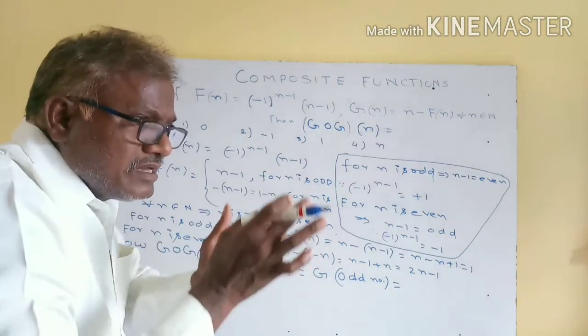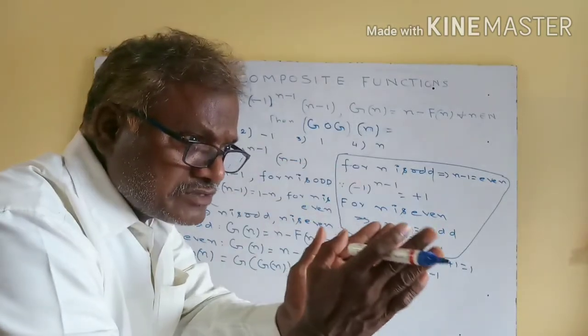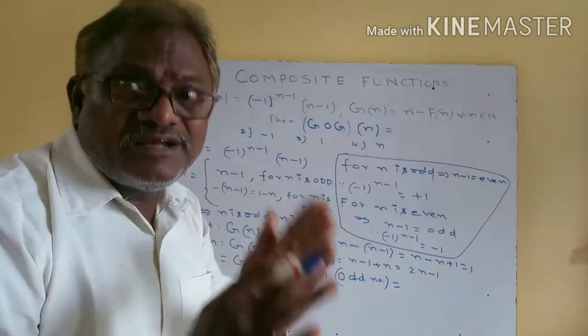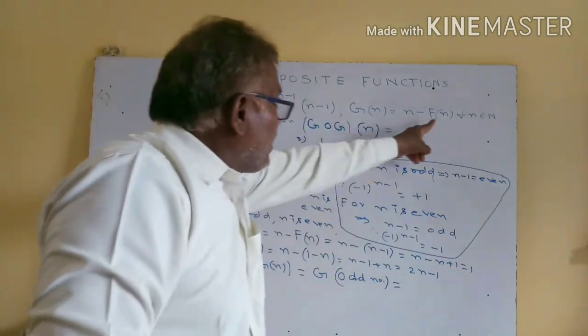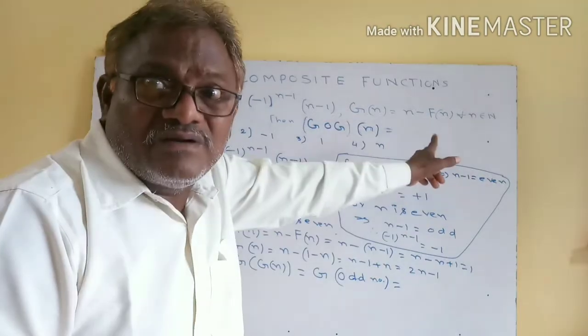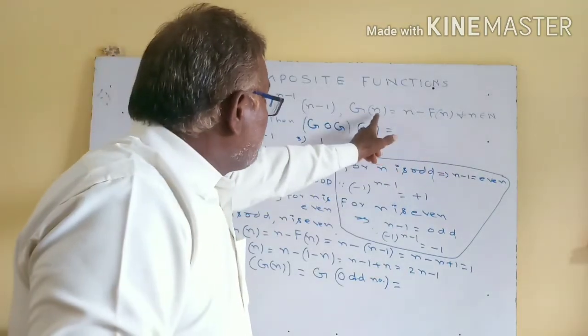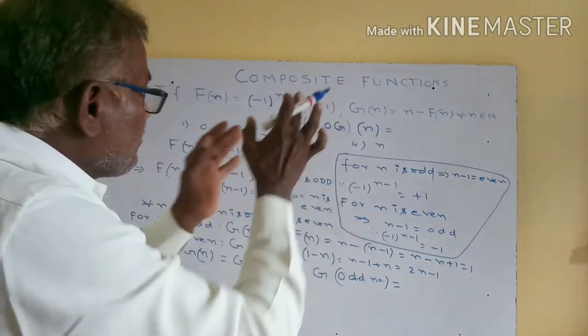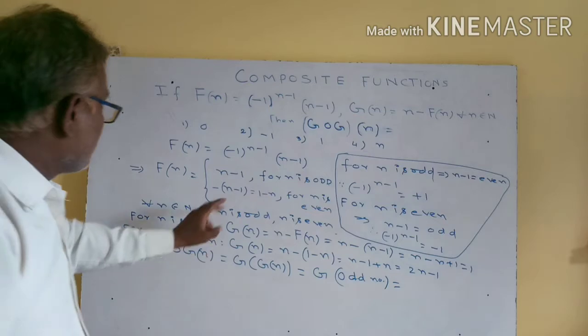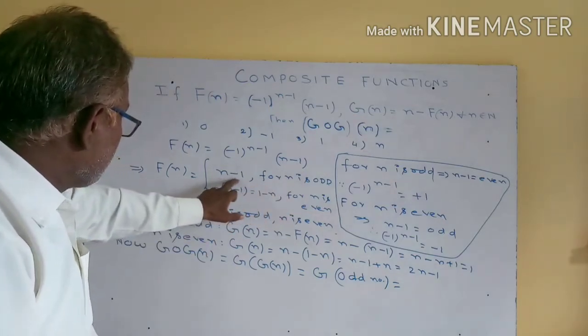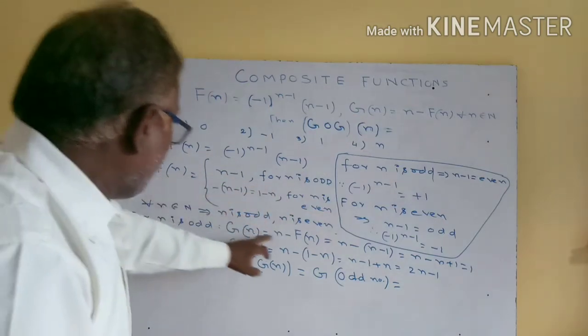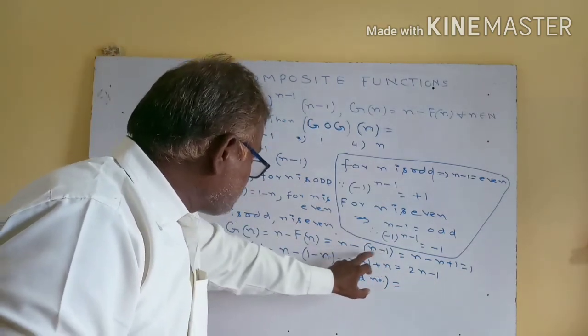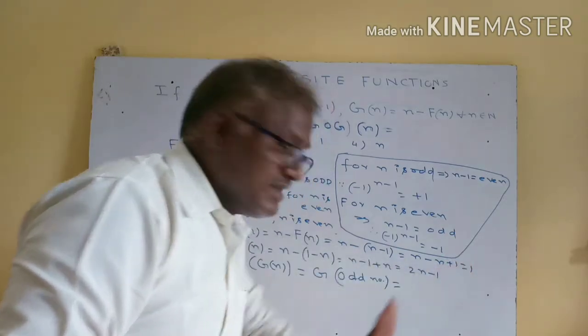So n is equal to n. Because n belongs to natural numbers, then n is equal to n. Now g(n) is equal to... f(n) is equal to... That means f(n) is equal to... So g(n) value is n minus f(n). Now n is equal to n, so f(n) is equal to n minus (n minus 1) is equal to 1.